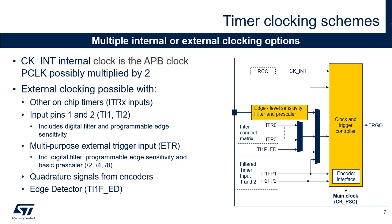Timer 1 and Timer 3 feature multiple clocking options. The clock and synchronization unit, also responsible for timer chaining, handles the clock for the counter. The default clock comes from the Reset and Clock Controller, or RCC. This timer clock, CK-INT, is the APB clock, possibly multiplied by 2. External timer clocking makes it possible to count external events or to have a counting period externally adjusted. The clock source can be provided by other on-chip timers, using one of the four internal trigger inputs, ITR0 to ITR3.